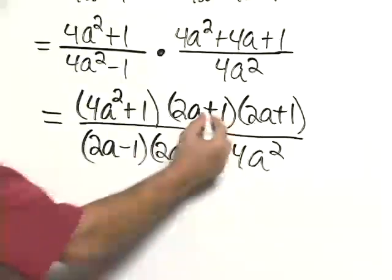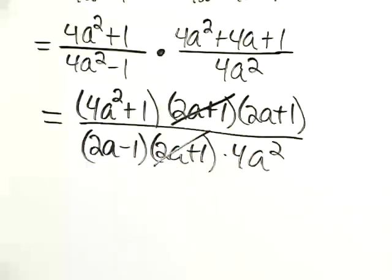You see now, we have 2a plus 1 and 2a plus 1, so we can remove a factor of 1. And those are the only factors of 1.